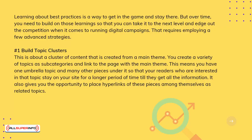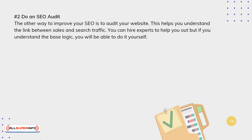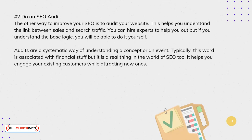Number 2: Do an SEO Audit. The other way to improve your SEO is to audit your website. This helps you understand the link between sales and search traffic. You can hire experts to help you out, but if you understand the base logic, you will be able to do it yourself. Audits are a systematic way of understanding a concept or an event. Typically, this word is associated with financial stuff, but it's a real thing in the world of SEO, too. It helps you engage your existing customers while attracting new ones.